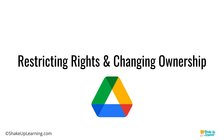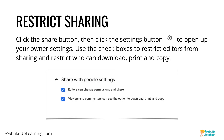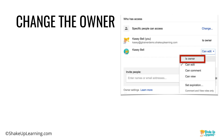Now let's talk about restricting rights and changing ownership. You can restrict sharing — when you click the share button in the top right, there's a little settings icon that opens your owner settings. You can use those checkboxes to restrict editors from sharing, or restrict who can download, print, and copy. If you don't want someone to invite another collaborator or to download, print, or make a copy, checking these boxes will prevent it.